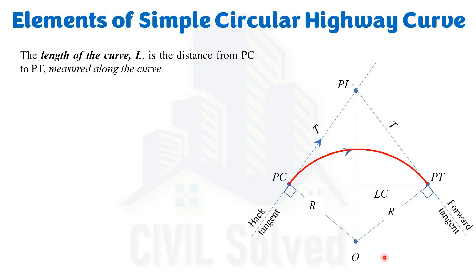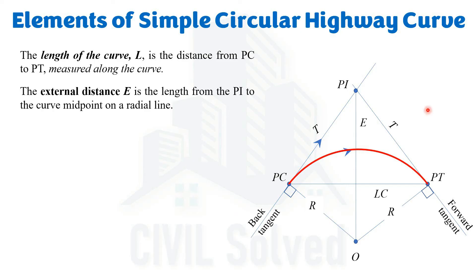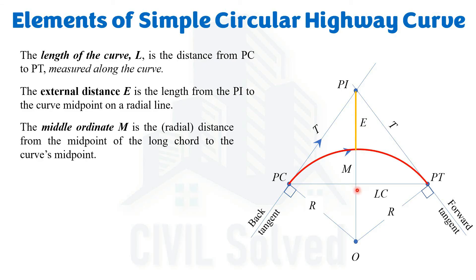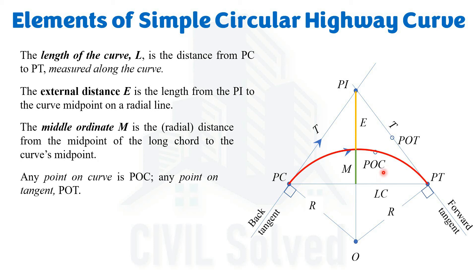If we mark a vertical line between O and PI, we can define more elements. The distance from PI to the midpoint of that radial line is called the external ordinate, represented with capital E. The distance between the midpoint of the long chord and the midpoint of the arc is named the middle ordinate, represented with capital M.